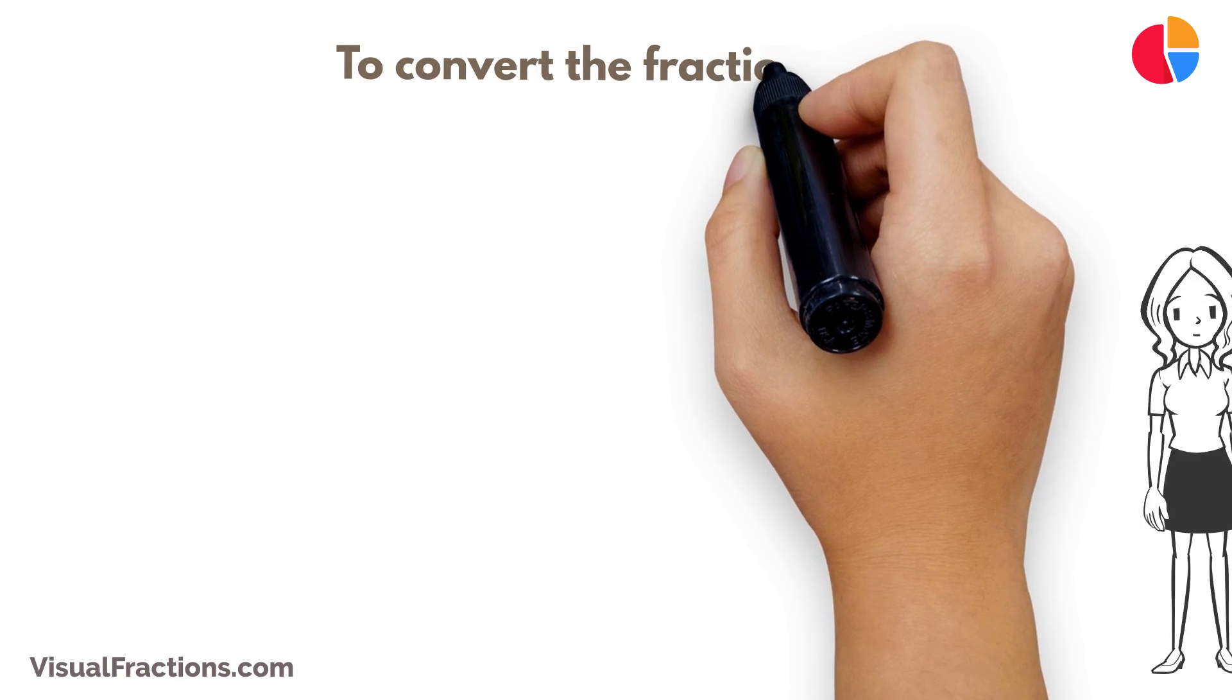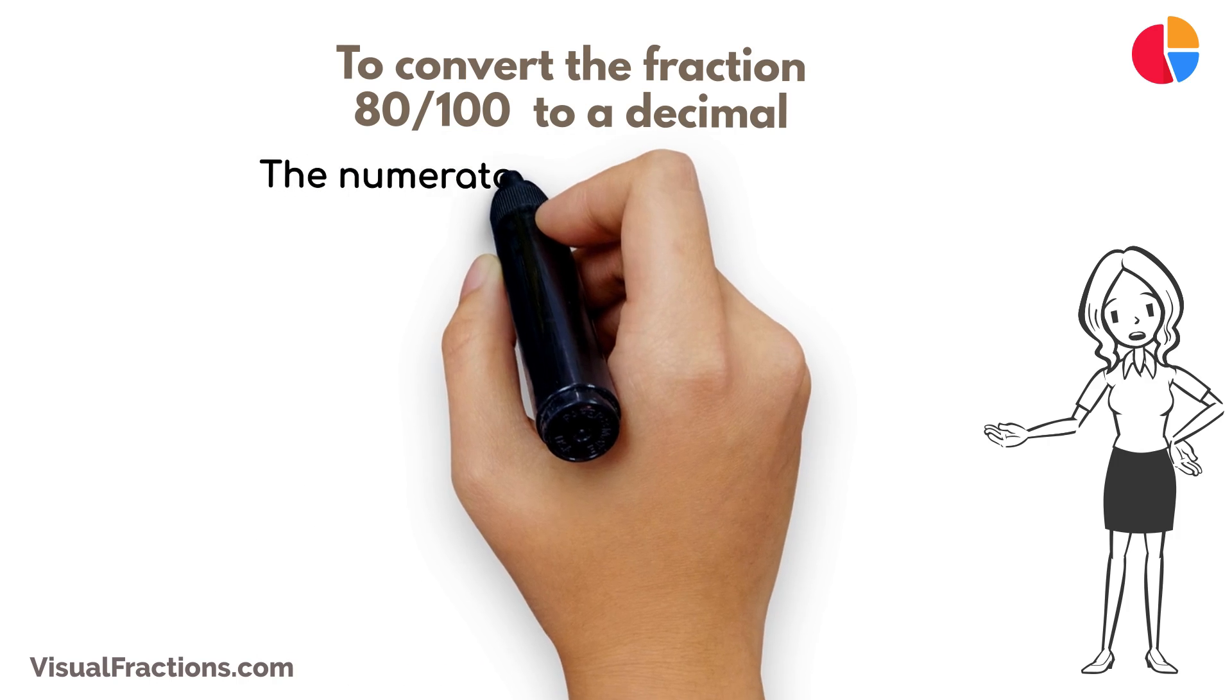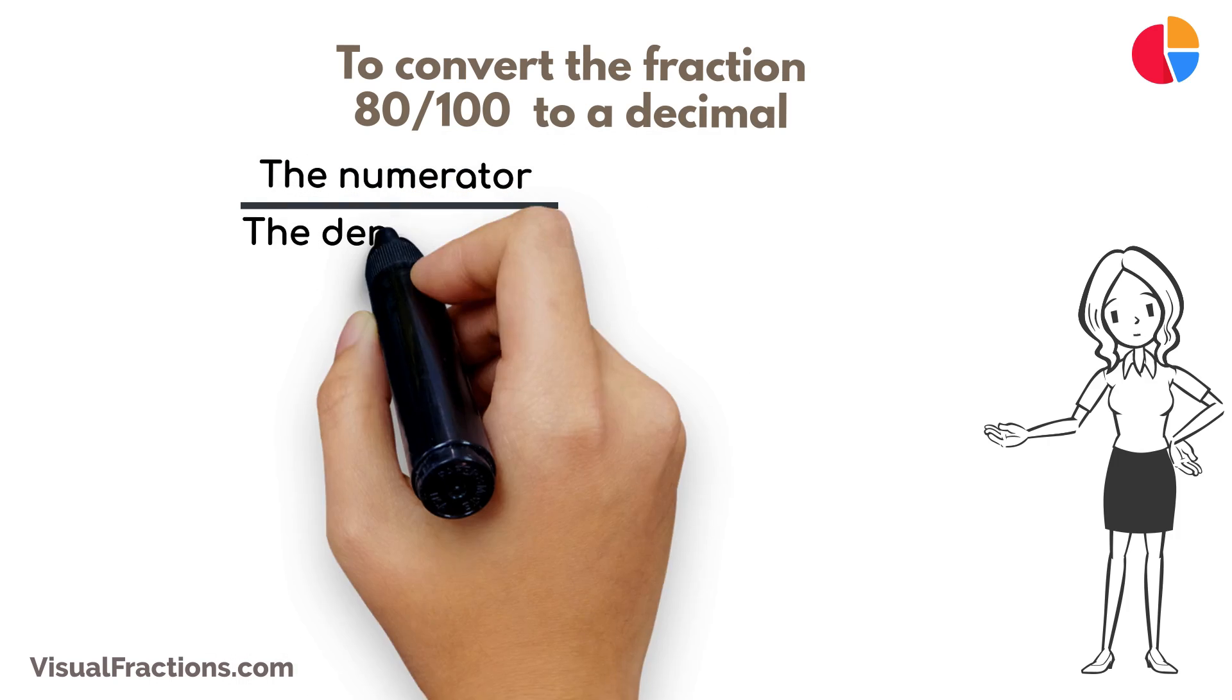To convert the fraction 80 one hundredths to a decimal, all we need to do is divide the numerator, the top number, by the denominator, the bottom number.